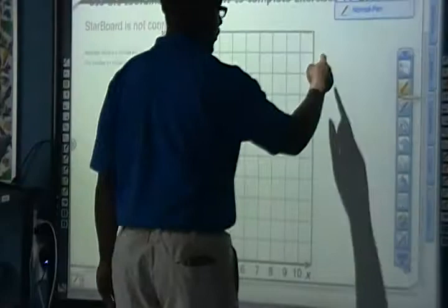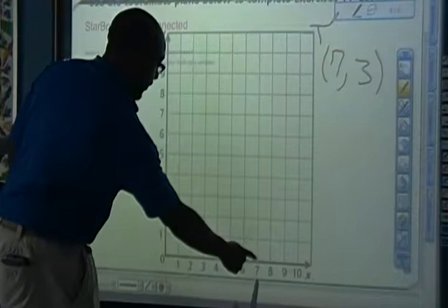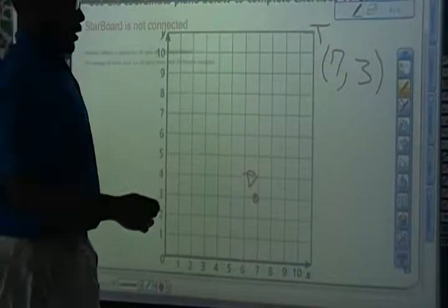So let's say for instance they give us the ordered pair 7, 3, and they'll say this one is going to be T. So I'll run first, run to 7, and then jump 3: 1, 2, 3. That is my ordered pair, and I'll put T.